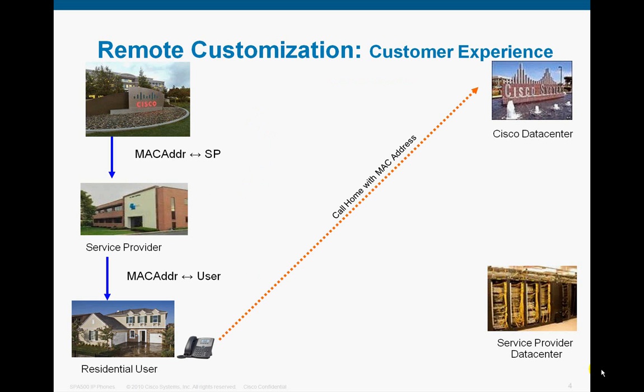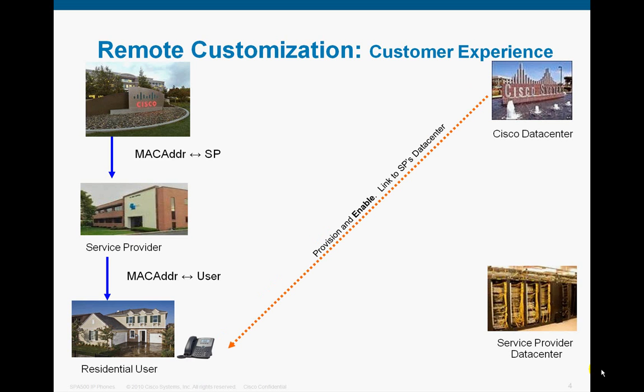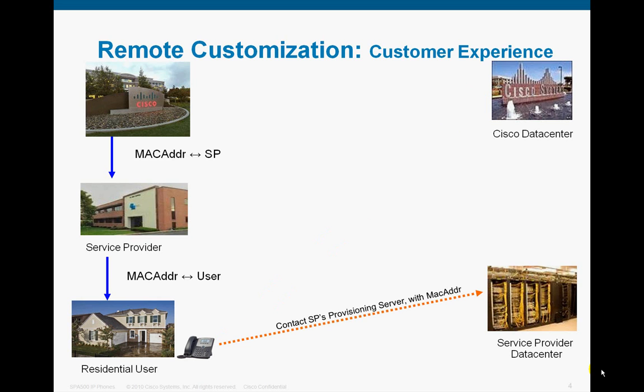When the device is powered up at the customer, the device contacts Cisco's provisioning server and sends its MAC address. A database lookup takes place and the device is then provisioned, enabled, and linked to the service provider's data center. The phone then makes contact with its service provider and sends its MAC address, at which point the data center downloads the customer's account profile to the specific phone.